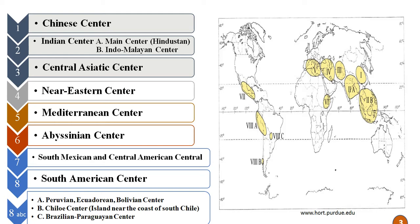The eight centers are: first, the Chinese center; second, the Indian center with two sub-centres — the main Hindustani center and the Indo-Malayan center; third, the Central Asiatic center; fourth, the Near Eastern center; fifth, the Mediterranean center; sixth, the Abyssinian center; seventh, the South Mexican and Central American center; and eighth, the South American center, which has three sub-centres: the Peruvian-Ecuadorian-Bolivian center, the Chilean center, and the Brazilian-Paraguayan center.